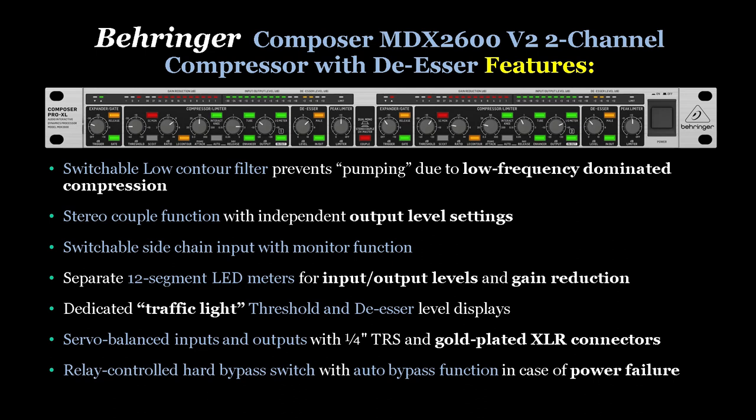The unit also has a switchable low contour filter which prevents pumping due to low frequency dominated compression, a stereo couple function with independent output level settings, a switchable side chain input with monitor function, separate 12-segment LED displays for input, output levels, and gain reduction, plus a traffic light type threshold and de-esser level display. It also features servo balanced inputs and outputs and a relay-controlled hard bypass switch with auto bypass in case of power loss.